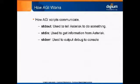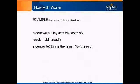Standard in is like getting input from the keyboard — it's used to get information back from Asterisk. You can also use standard error, which outputs debug information to your CLI console so you can see your script executing. For example, you write a command to standard out, read in the result, and if you want to write that result to the console, you use standard error.